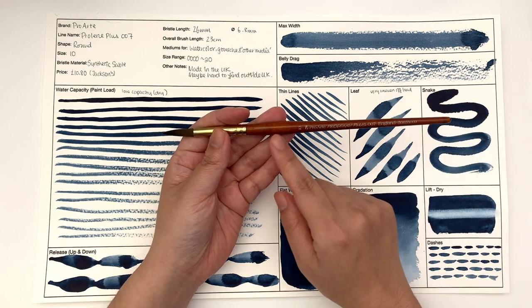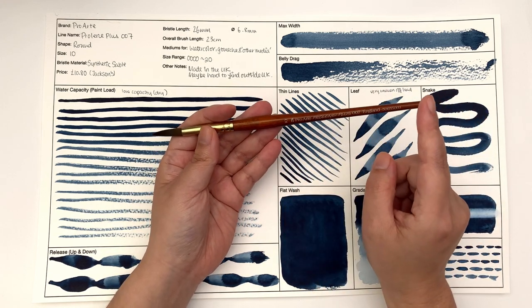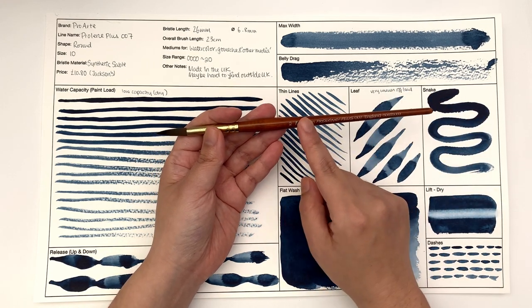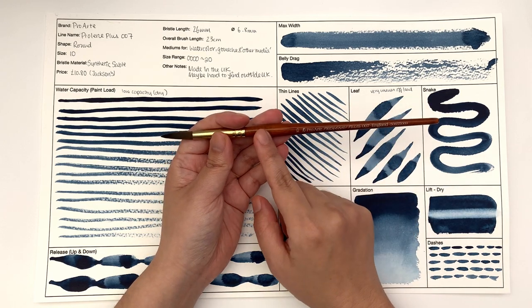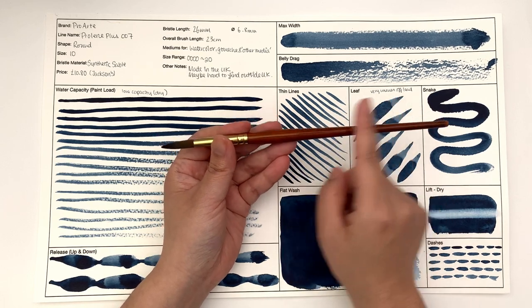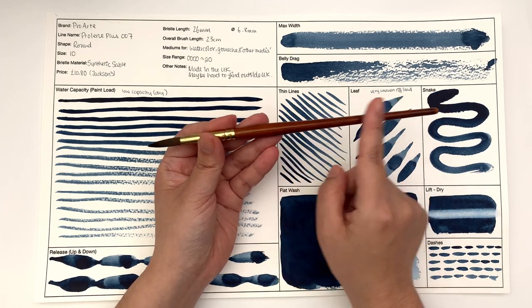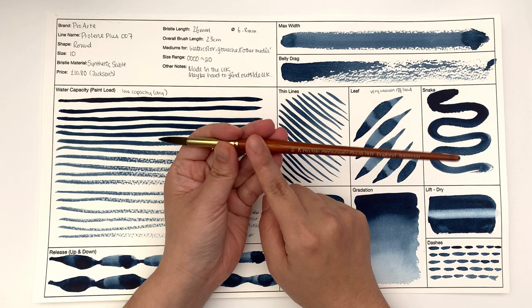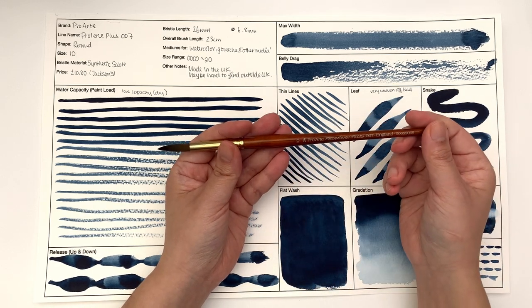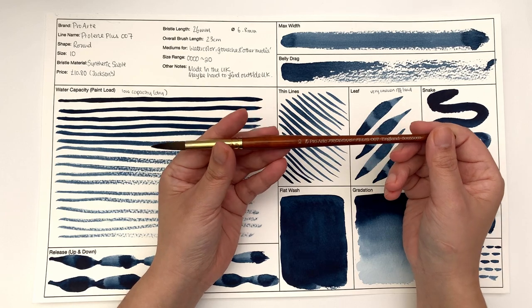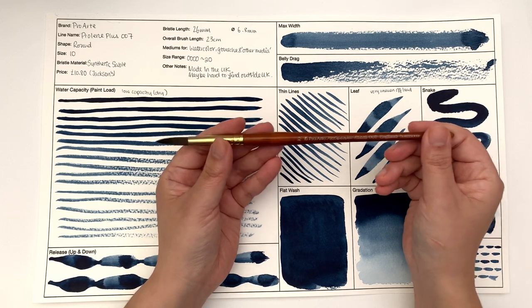It's not the cheapest range. I wouldn't go for the cheapest range, the ProLean range, which has the black bristle. I found that with that one, the paint coating on the bristle cracks after a while. I think this is a good middle between good value for money and really good quality.